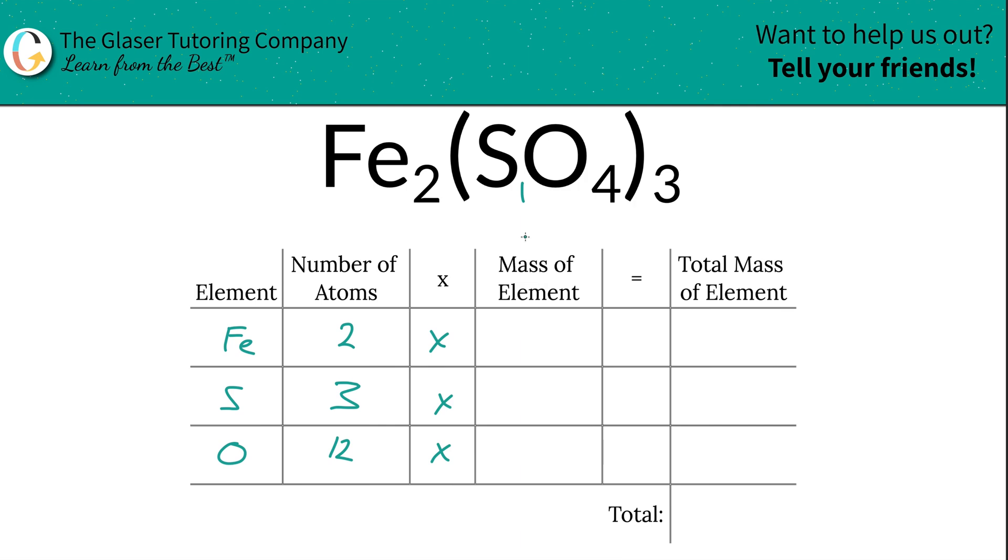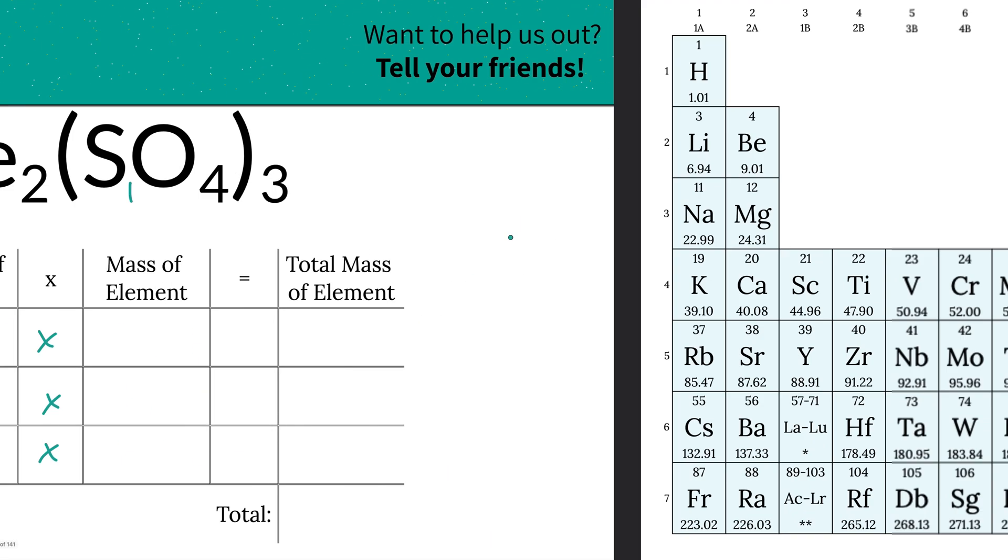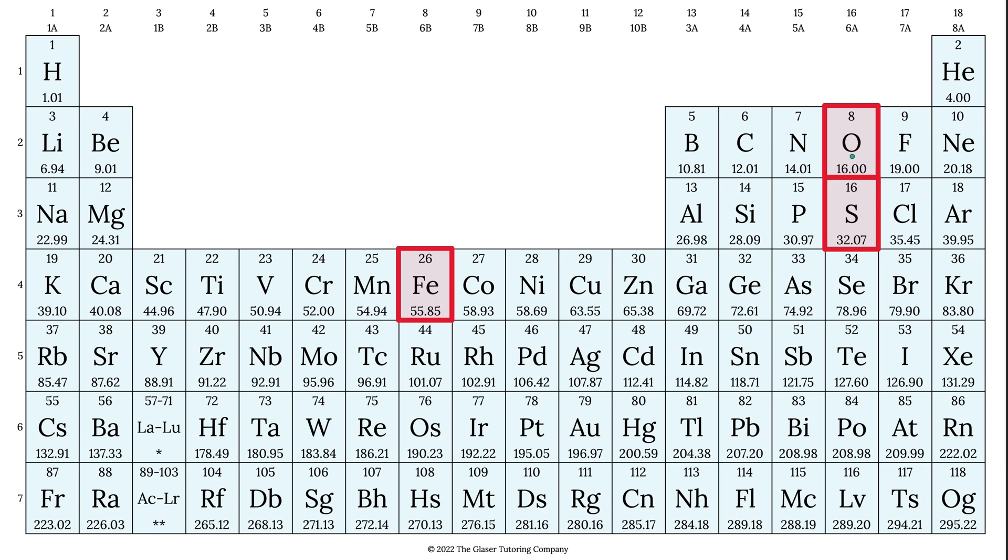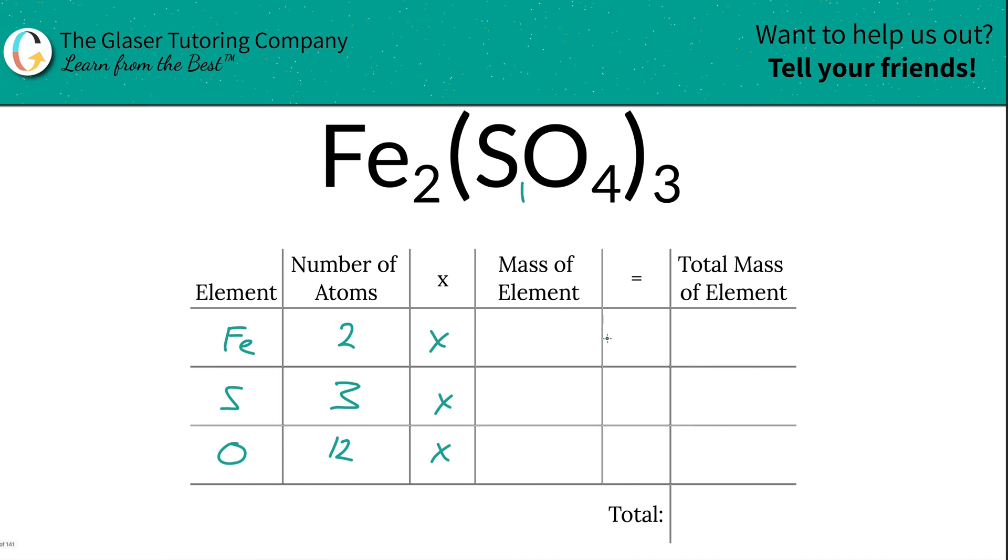Then we're going to take those number of atoms and multiply it by the mass of each element, and those masses are found on the periodic table, so let's take a look. So iron here is going to be 55.85, oxygen is 16, and sulfur is about 32.07. So those are the values we're going to write down.